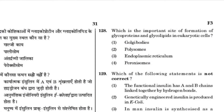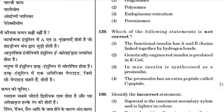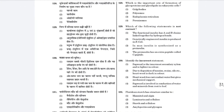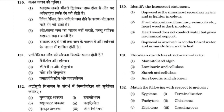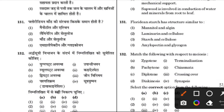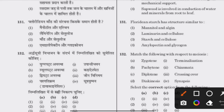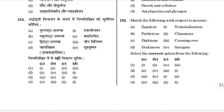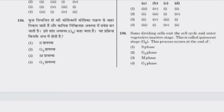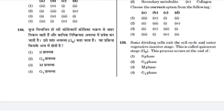Which organelle synthesizes glycoproteins and glycolipids in eukaryotic cells? The answer is Golgi bodies. The functional insulin has A and B chains linked together by hydrogen bonds — this is an incorrect statement. Incorrect statement: heartwood (support) is the innermost secondary xylem and lighter in color. Floridean starch has a structure similar to amylopectin and glycogen. Match the following in respect to meiosis — the answer is 4, as in synopsis and pachytene, crossing over occurs.